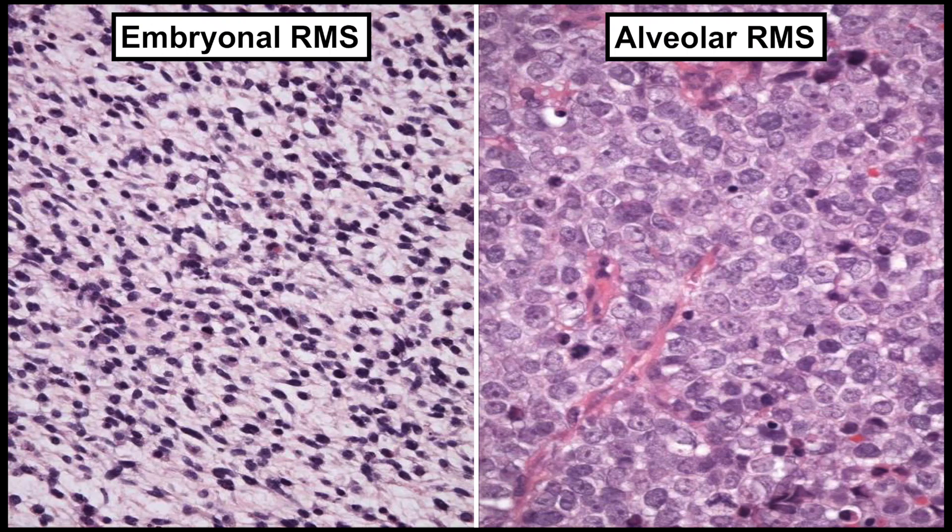Here's an example of an embryonal rhabdomyosarcoma on the left, and an alveolar rhabdomyosarcoma on the right. Alveolar rhabdomyosarcoma is typically composed of uniform large cells with scant cytoplasm. In contrast,